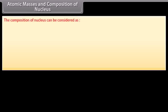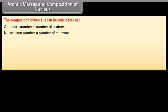The composition of nucleus can be considered as: Let Z be atomic number which is equal to number of protons. Let N be neutron number which is equal to number of neutrons. Let A be mass number which is equal to Z plus N, which is equal to total number of protons and neutrons.